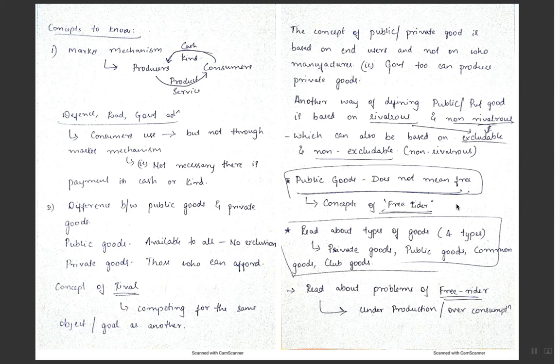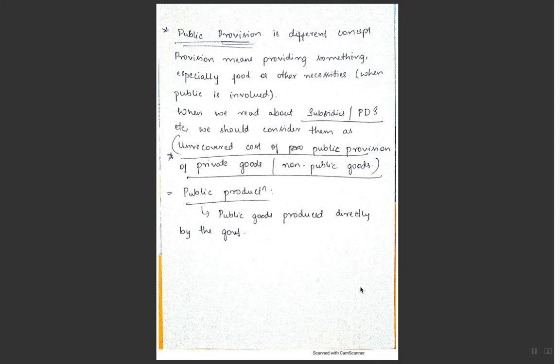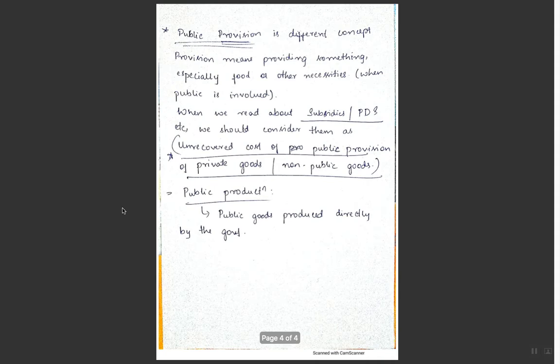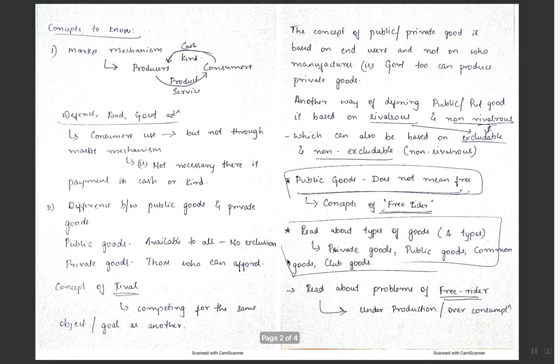Please read about the problems of the free rider — there'll be under-production or over-consumption associated with it, but that's beyond the scope of this topic. Now that you understand the difference between public goods and private goods, and you know market mechanism, let's look at public provision. We've also discussed excludable, non-excludable, rivalrous, and non-rivalrous.